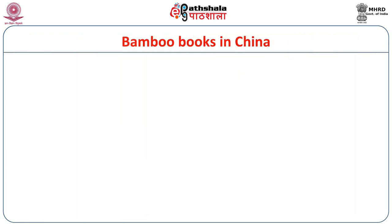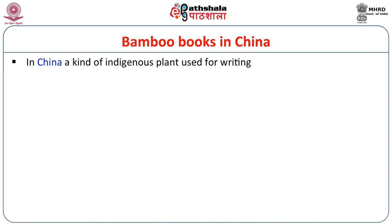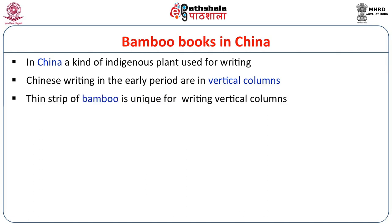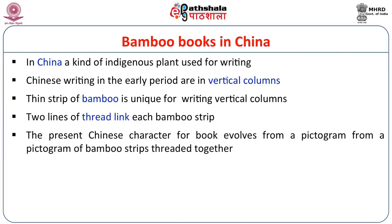Bamboo books in China: In China, an indigenous plant was used for writing. Chinese writing in the early period is in vertical columns, and thin strips of bamboo are unique for writing in vertical columns. Two lines of thread link each bamboo strip. The present Chinese character for 'book' evolves from a pictogram of bamboo strips threaded together. The Chinese used bamboo as a book.